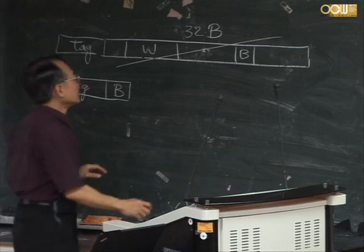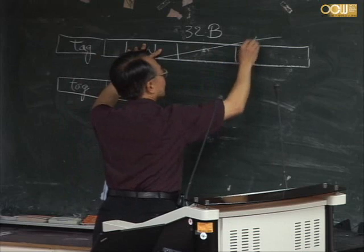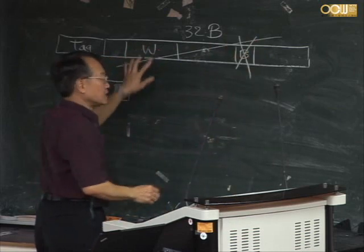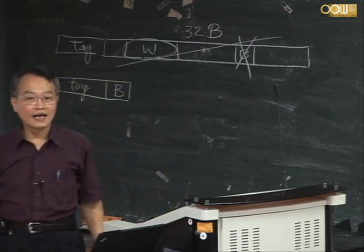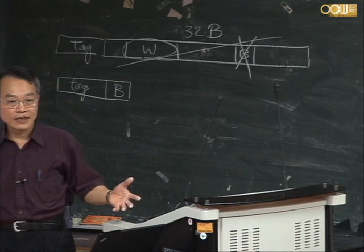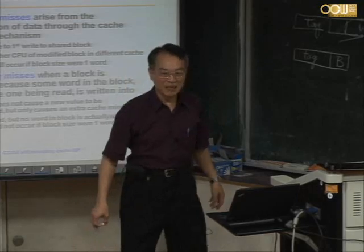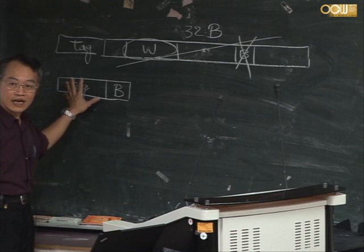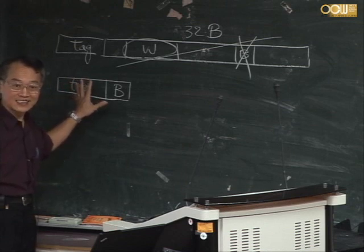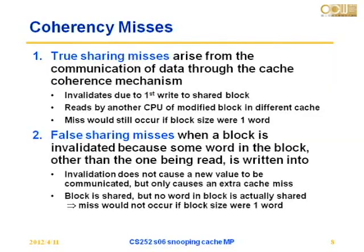False sharing is caused by something else in the same line — the invalidation is due to that byte, but I am the innocent victim. The reasons for larger lines are spatial locality and the tag storage overhead being too large if lines are very small. For anything bad, there will be some bright sides. Now you understand what true sharing misses and false sharing misses mean.